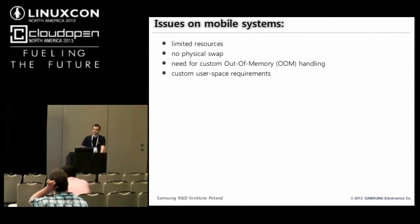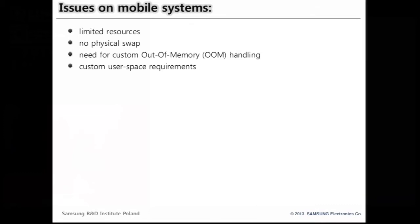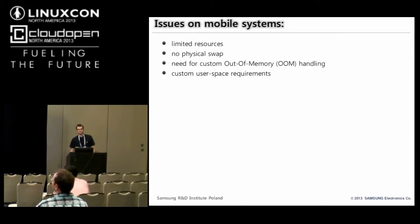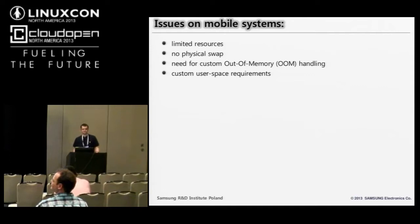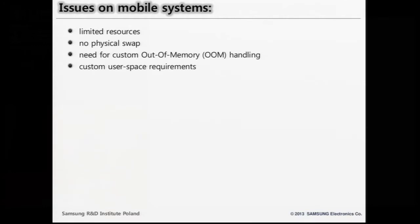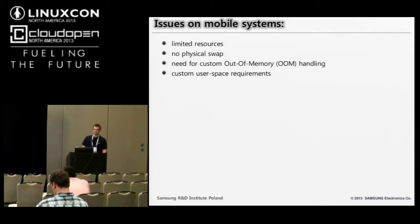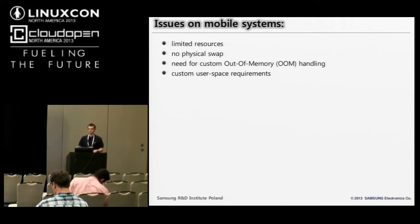So what issues with memory management do we have on mobile systems? We have limited memory resources, no physical swap, need for custom auto-memory handling because for users some applications are more important than others and the kernel doesn't know about it. We also have custom user space requirements connected with custom auto-memory handling, because we prefer to do memory handling in user space where we have more data about processes and platform requirements. Generally, we would like to have memory management policies in user space because it's more flexible and our platform software can make better decisions than the kernel alone.